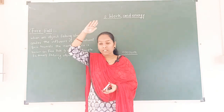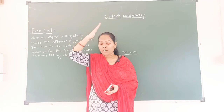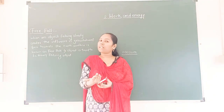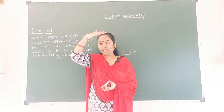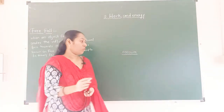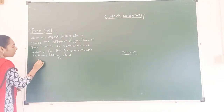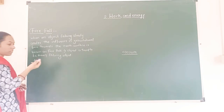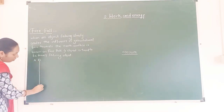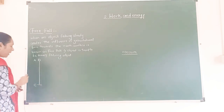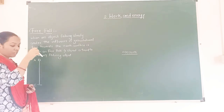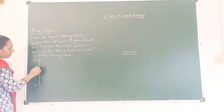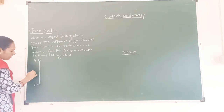Consider an object falling from a height. The starting point at the height is point A, and the point on the earth's surface where the object lands is point C. The point in between the earth's surface and the height is considered to be point B. The object falls from point A under the influence of gravitational force down to point C on the earth's surface.